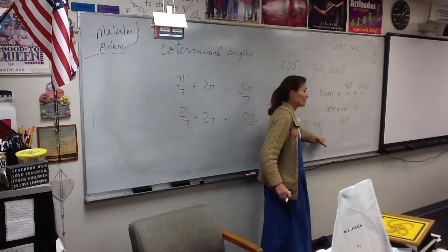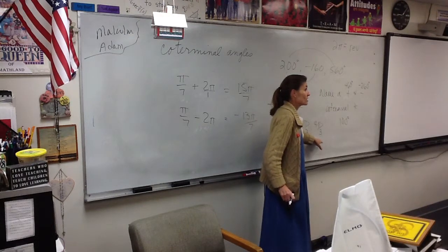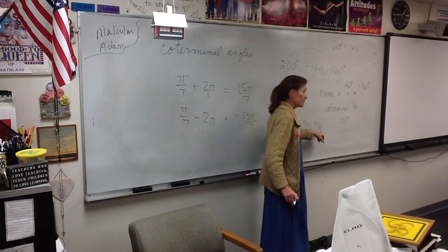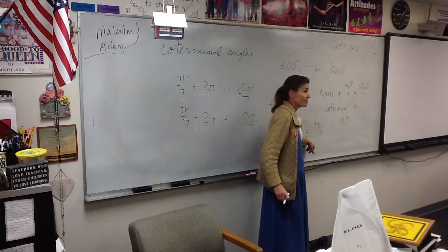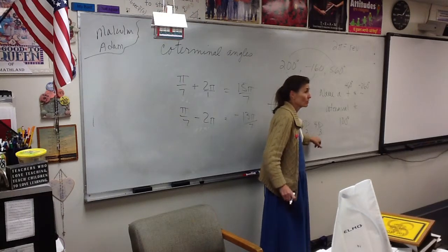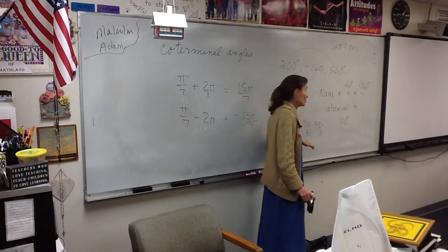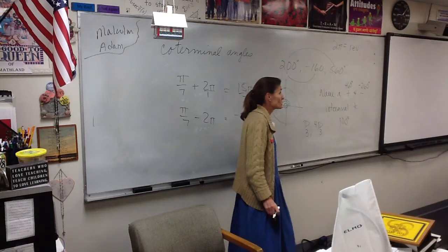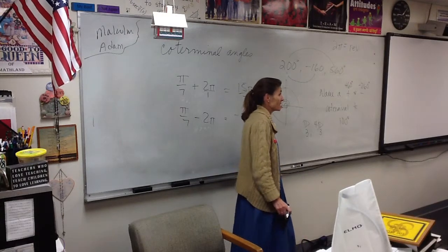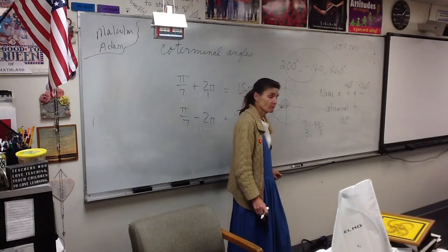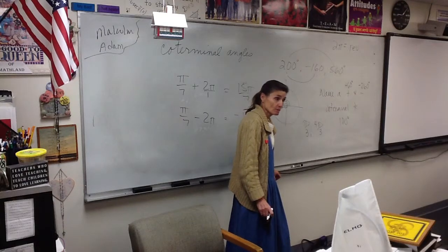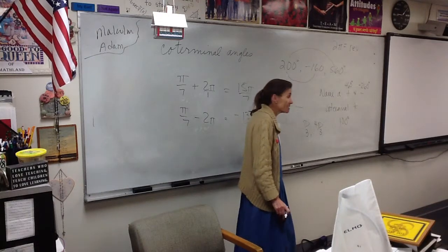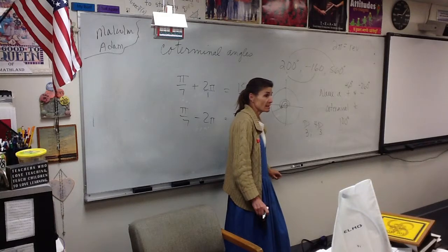They're like opposite of each other — they're not co-terminal. To be co-terminal, what has to be the case? You add or subtract revolutions. If you're in degrees, that means adding or subtracting 360. If you're in radians, that means adding or subtracting 2 pi.